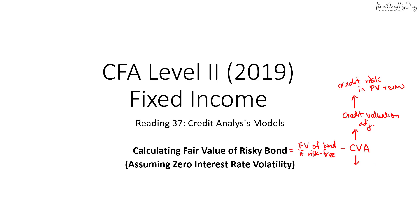To get the CVA, we need to calculate the expected loss each year, then discount them back to time zero using the risk-free rate for all periods. To get the expected loss, we calculate the expected exposure of the bond each year, then multiply by the loss given default — which is 1 minus the recovery rate — then multiply by the probability of default for that year. The calculation involves many steps, but I'll show you how to do it systematically.